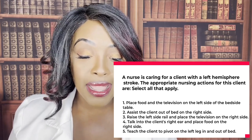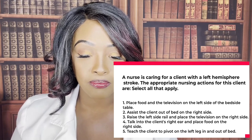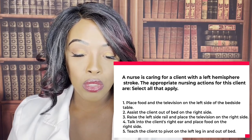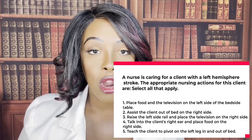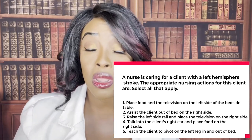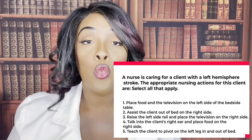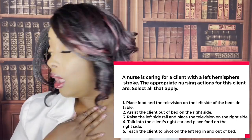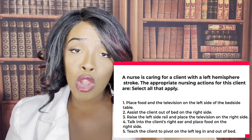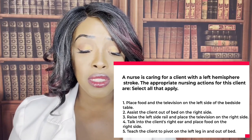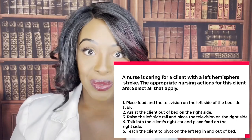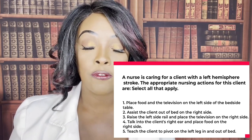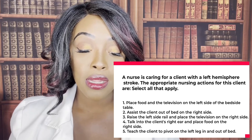Choice three: raise the left side rail and place the television on the right side. The right side is the deficiency side, so how are they going to see well? That's false. Choice four: talk to the client's right ear and place food on the right side. False — we're going to do it on the left side where it's strong. Choice five: teach the client to pivot on the left leg in and out of bed. True — we want them using that strong leg, that strong side, because that's less of a risk for them to fall and injure themselves. So the correct answers are number one and number five.